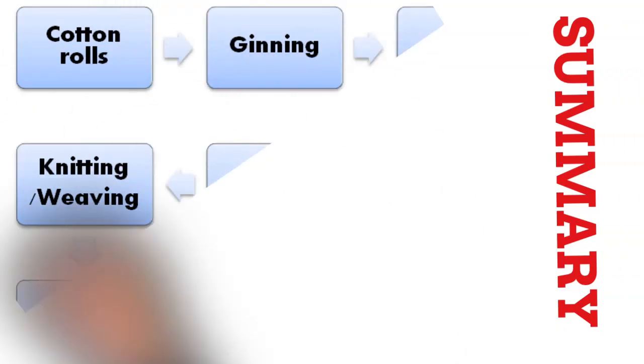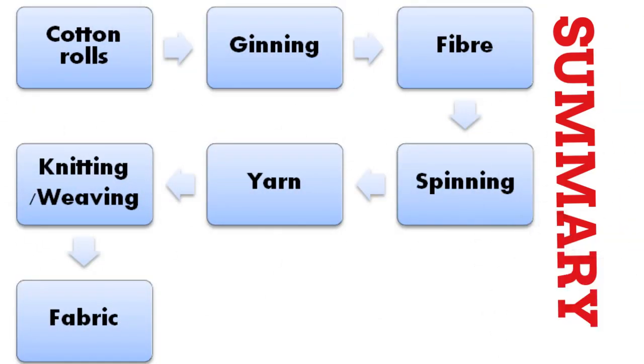The summary of this topic is, cotton rolls by the process of ginning turned into fiber. Fiber by the process of spinning turned into yarn. Yarn by the process of knitting and weaving turned into fabric.